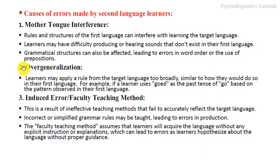The second cause is overgeneralization. Overgeneralization means applying a grammatical rule too broadly, where it does not apply. For example, a learner may overapply a past tense rule incorrectly. Overgeneralization is based either on patterns observed in the target language or in the first language.